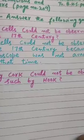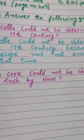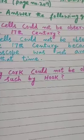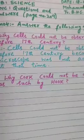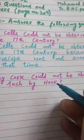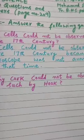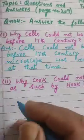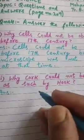We can only observe things whose thin slices are prepared. We can observe under the microscope only those things which have thin layers, like the thin slices of cork that Hook made and then observed. The whole cork cannot be observed because cork is a solid structure, and a solid structure cannot be seen under the microscope.